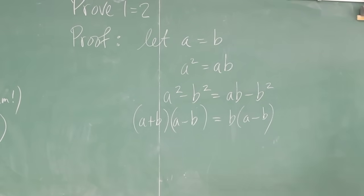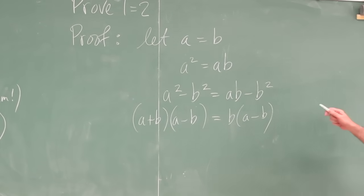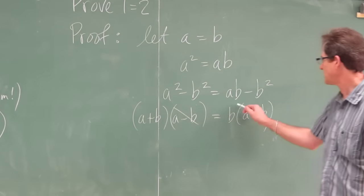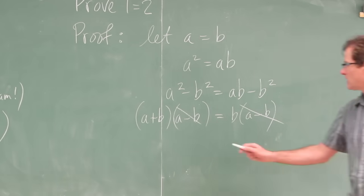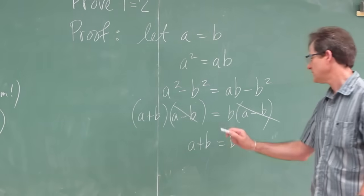Now, hold on before you say anything. At this point, I can divide both sides by a minus b. I can just cancel a minus b. So I get a plus b equals b.